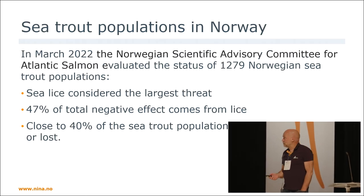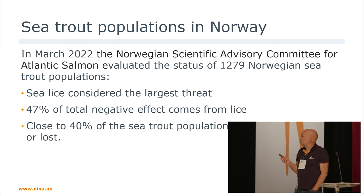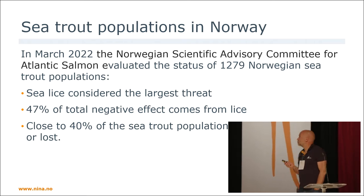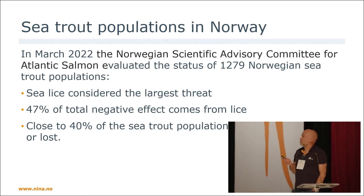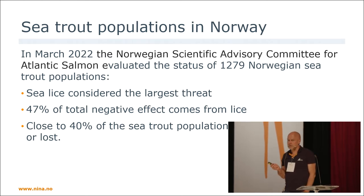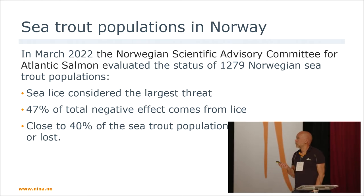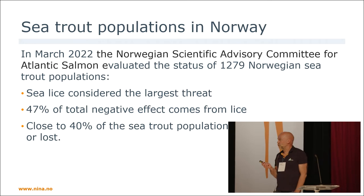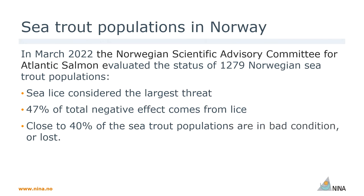Some months ago, the status of more than 1,000 Norwegian sea trout populations were evaluated. Sea lice were considered the largest threat — more than approximately 47% of the total negative effects come from lice, and close to 40% of the sea trout populations are in bad condition or lost.